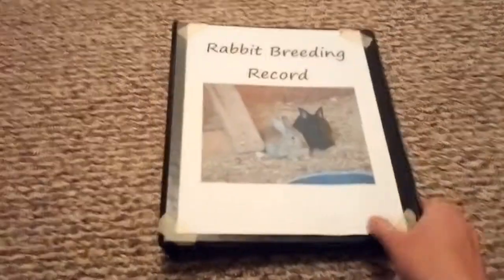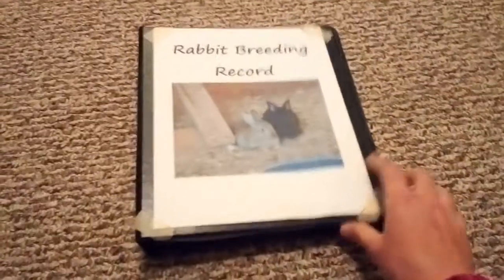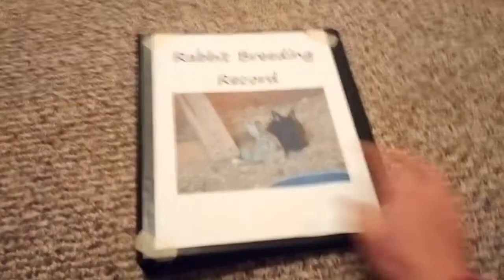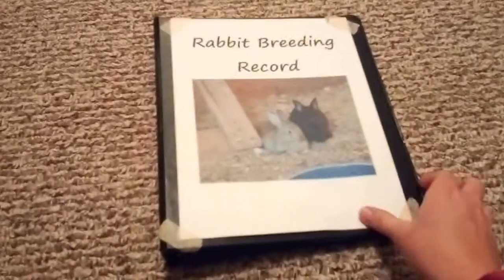I have a three-ring binder which I just taped a cover to so I don't forget what's in it. It says Rabbit Breeding Record and I have a picture of cute little babies taped on because this one doesn't have a little cover thing you can slide things in.